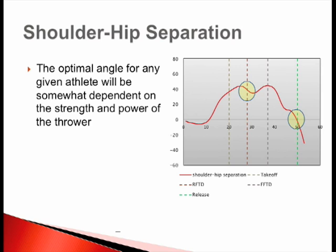The optimal angle for any given athlete is going to be somewhat dependent on their strength and power. If we look at the shoulder-hip separation of this athlete here, this is the time course of the throw, with this vertical line being release, this vertical line being rear foot touchdown, and this one being front foot touchdown. We see that at rear foot touchdown, the athlete is actually not at maximum shoulder-hip separation, but what is good here is that we're actually getting an increase in shoulder-hip separation through this transition phase.